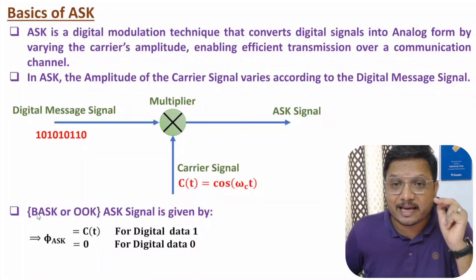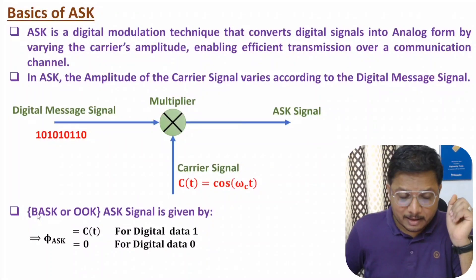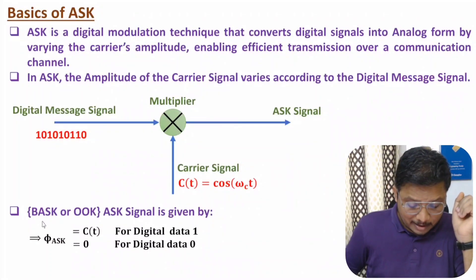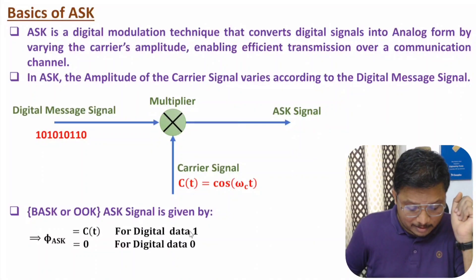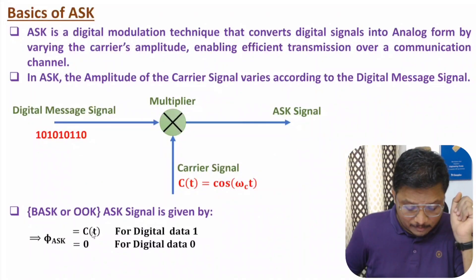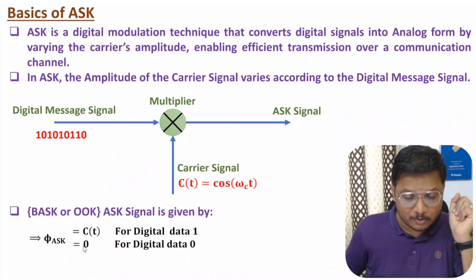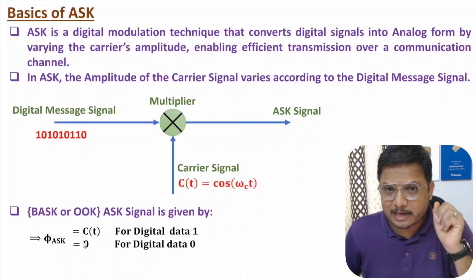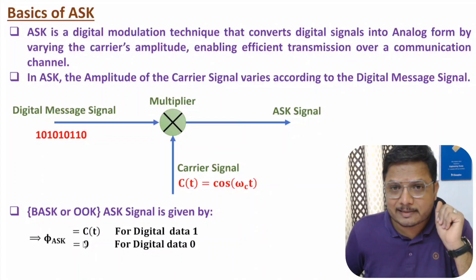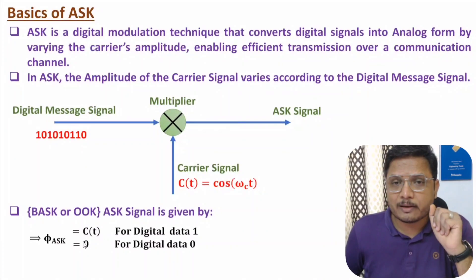This is binary ASK, also referred to as On-Off Keying. When the digital data is logic 1, the ASK signal is the carrier signal. When the digital data is logic 0, the ASK signal is 0.